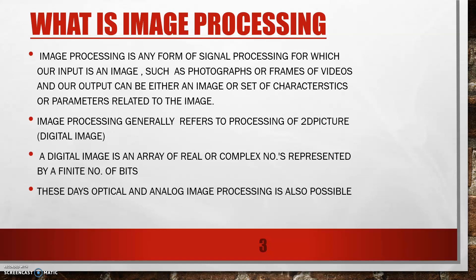An image is actually an array of complex or real numbers represented by a finite number of bits. That's why the photos we take usually have a size of 32 KB to about 100 MB. These days optical and analog image processing are also possible, though in older days there was only analog image processing.